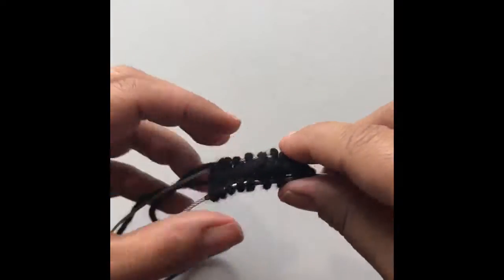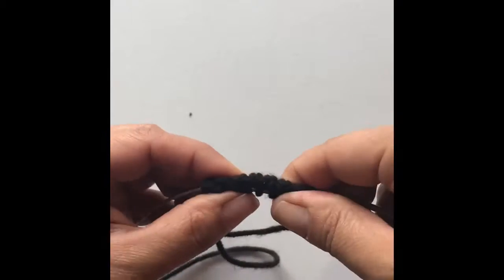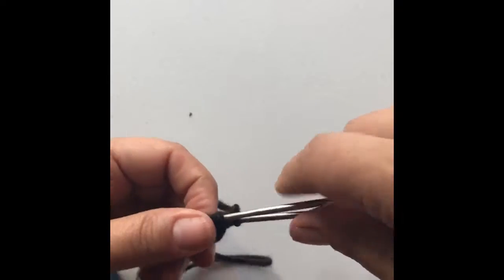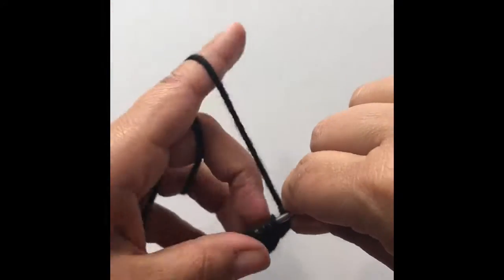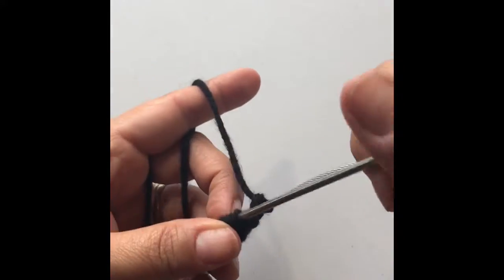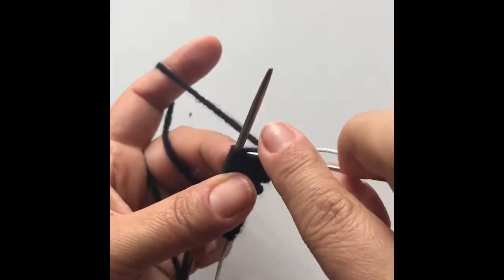Now, it's hard to tell now, but you're already starting to develop a toe there. So the next round is going to be straight knitting. We're not going to increase on this next round. So I'm going to speed through this and meet you on the other side.